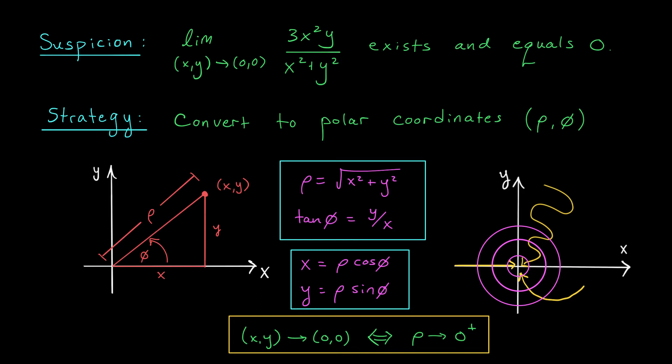Now, this is the big idea, folks. By converting from Cartesian to polar coordinates, we can convert a two-variable limit, which is something we generally find difficult to work with, into a one-variable limit, which is something that's more familiar. Let me show you what happens when we convert this limit into polar coordinates.